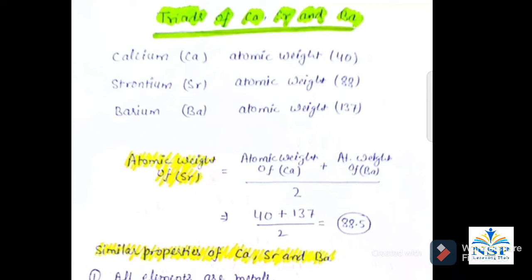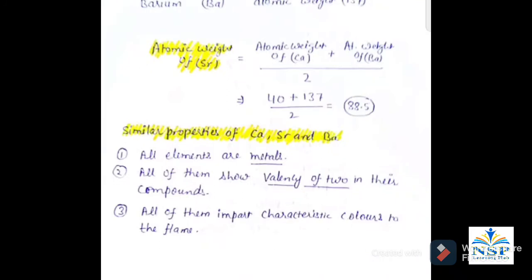The second triad of Dobereiner contains calcium, strontium, and barium. Calcium has atomic weight 40, strontium has atomic weight 88, and barium has atomic weight 137. The average of the first and third gives strontium's expected atomic weight as 88.5, which is nearest to 88. Similar properties are: all elements are metals, all show a valency of two in their compounds, and all impart characteristic colors to the flame.